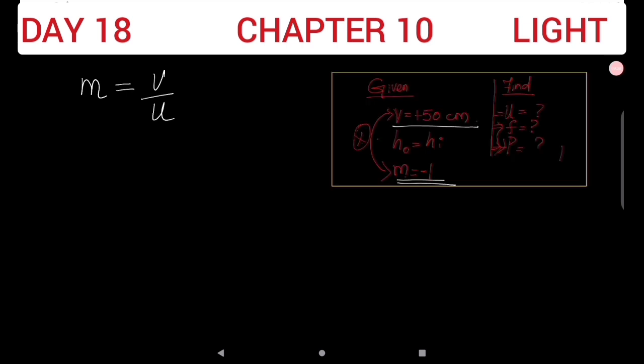Magnification formula: M is equal to V by U. M is equal to minus 1, so minus 1 is equal to 50 by U. Therefore, 50 is equal to U times minus 1. So U is equal to 50 divided by minus 1. The answer is U is equal to minus 50 centimeters.